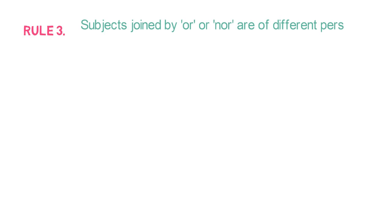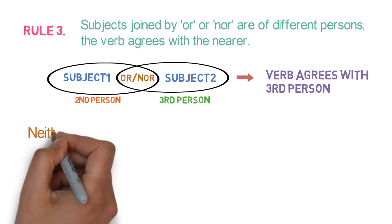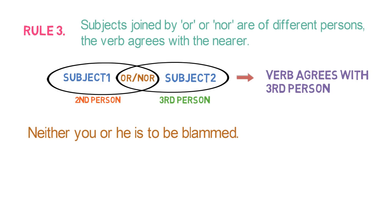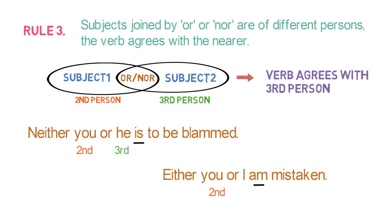Rule number 3 says: when the subjects joined by OR or NOR are of different persons, the verb agrees with the nearer subject. For example, 'Neither YOU nor HE is to be blamed.' Here subject YOU is in 2nd person and subject HE is in 3rd person, but verb IS is nearer to subject HE, so verb IS is used. Another example: 'Either YOU or I am mistaken.' Here the verb AM is used as it is nearer to subject I, which is in 1st person. So this is Rule 3.